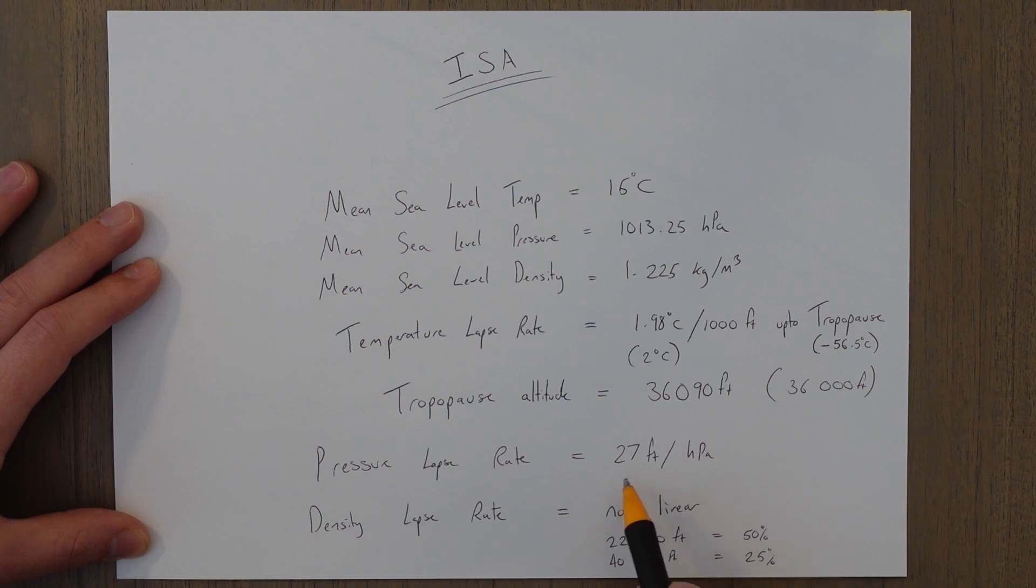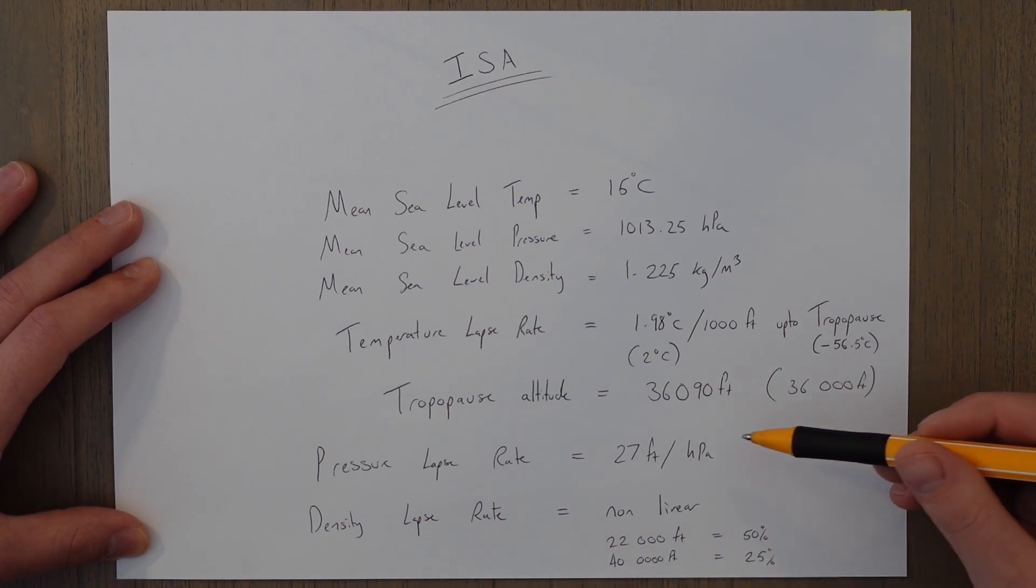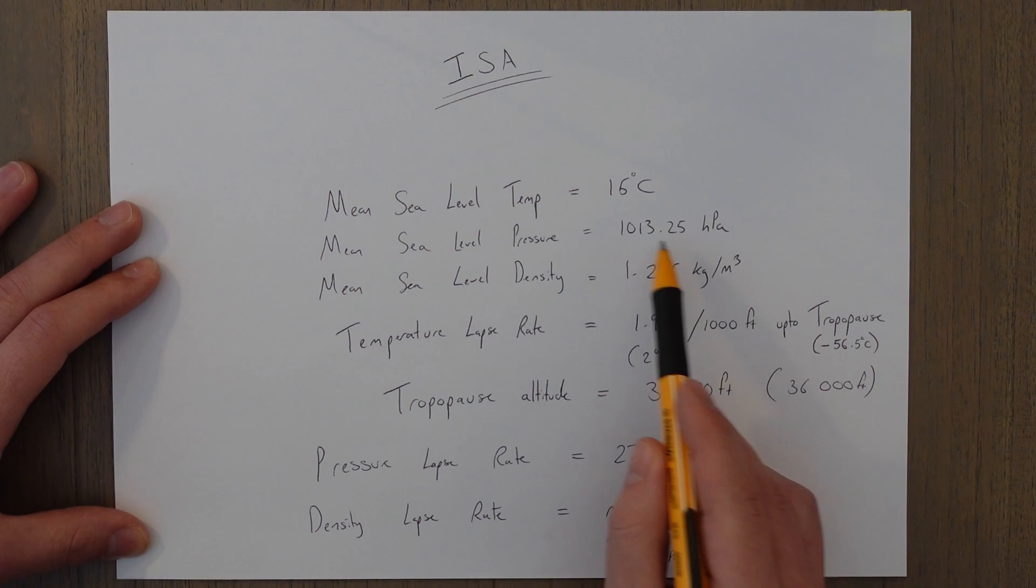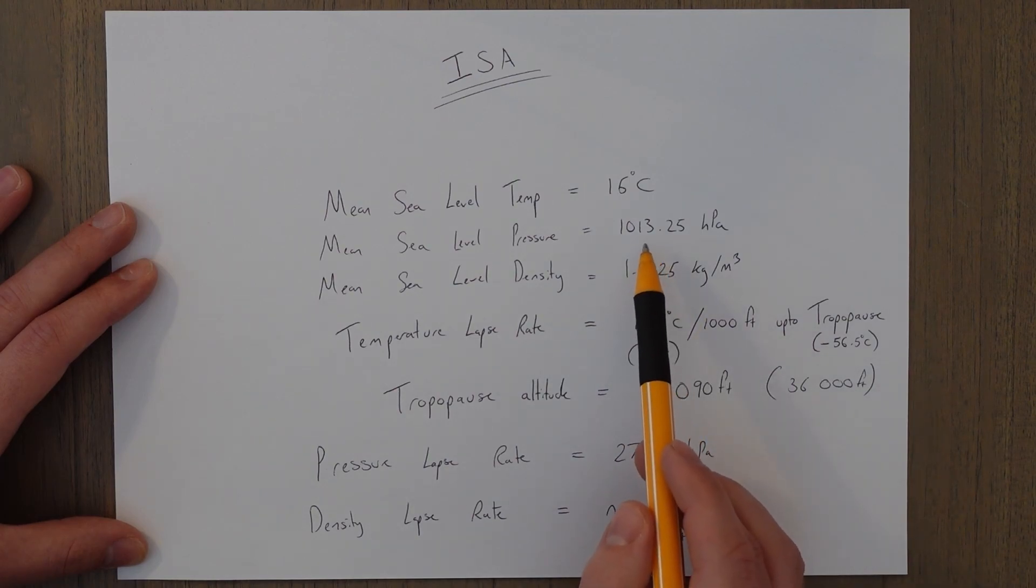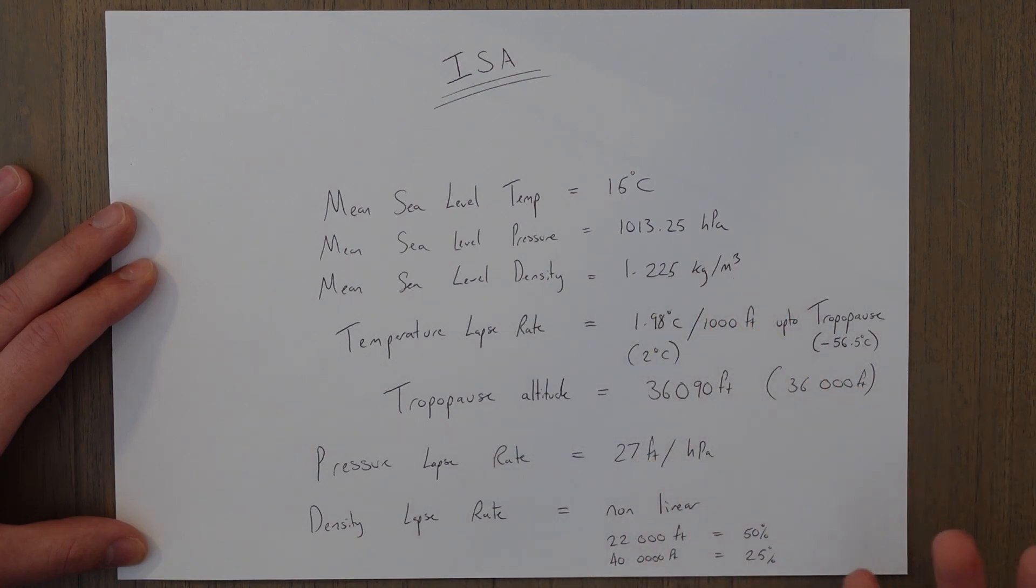There's a pressure lapse rate of 27 feet for every hectopascal drop. So as we increase in altitude by 27 feet, we'll see the pressure reduced by one hectopascal. The density lapse rate is non-linear and it's quite hard to define, but we can say that roughly at 22,000 feet the air is 50% as dense, and at 40,000 feet it's 25%.